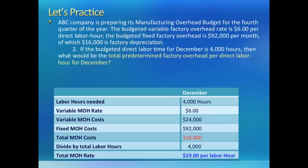Here is the solution to the second problem. Be careful about the language of the question. The question says what is the total predetermined overhead rate, meaning combining both variable and fixed cost and then calculating the rate. We reach $116,000 of total manufacturing overhead and divide by total direct labor hours for the month to get a manufacturing overhead rate of $29 per direct labor hour.